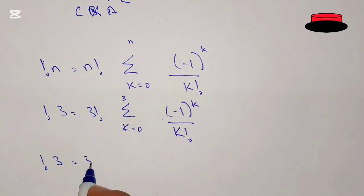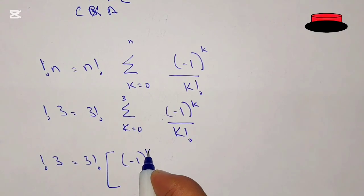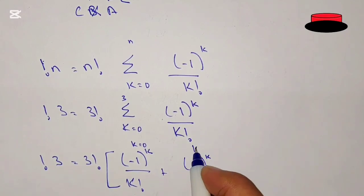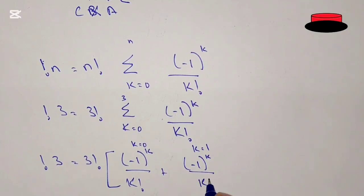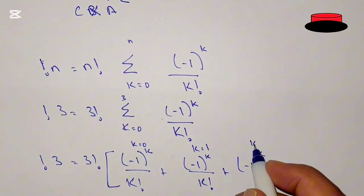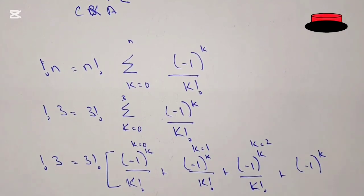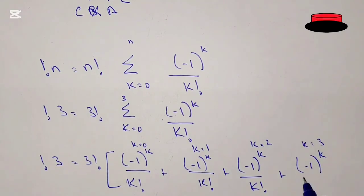So we write sub factorial 3 equal to 3 factorial times, in brackets: minus 1 to the power k where k equals 0 divided by k factorial, plus minus 1 to the power k where k equals 1 divided by k factorial, plus minus 1 to the power k where k equals 2 divided by k factorial, plus minus 1 to the power k where k equals 3 divided by k factorial.